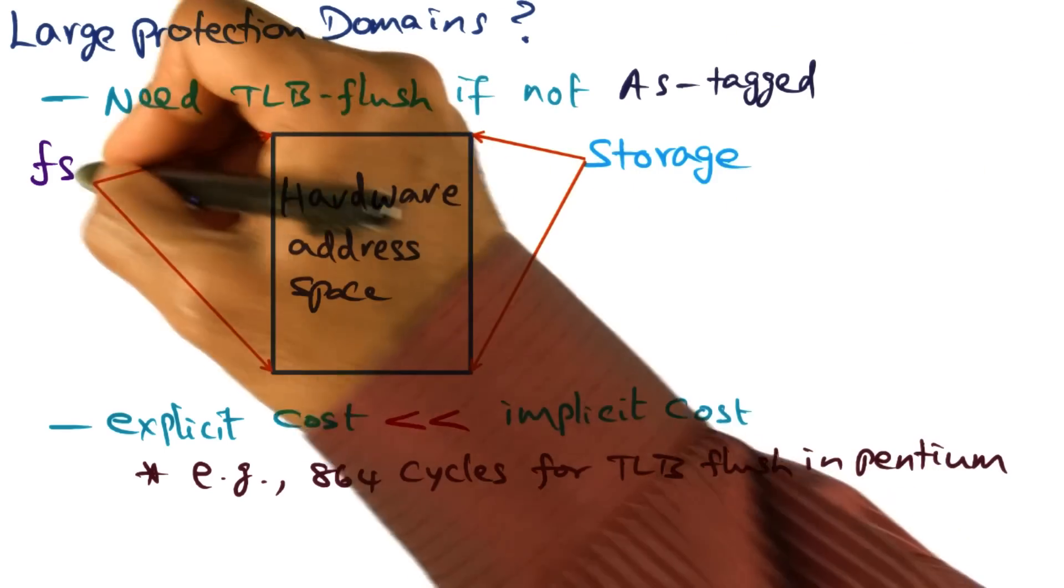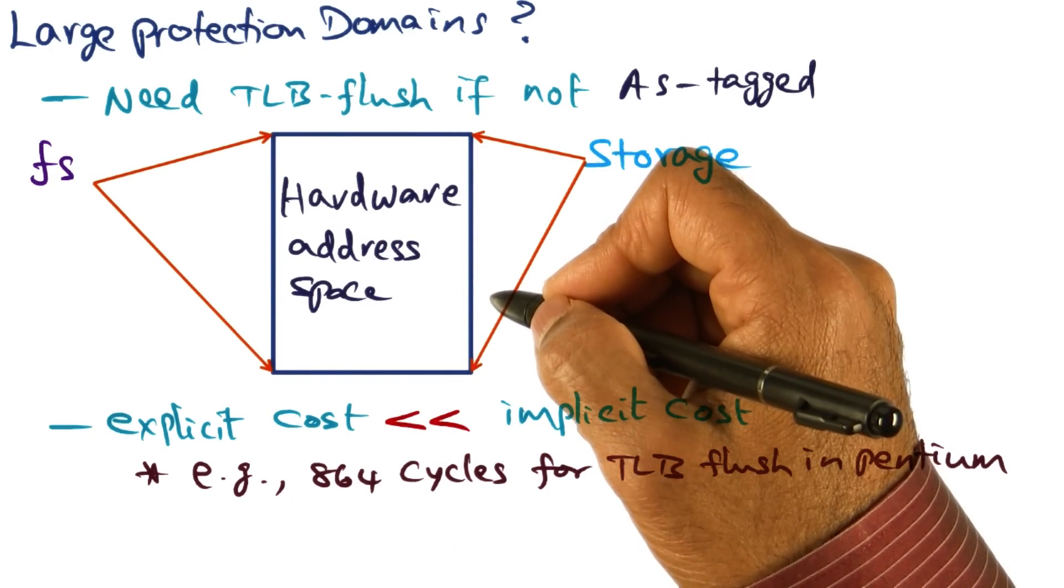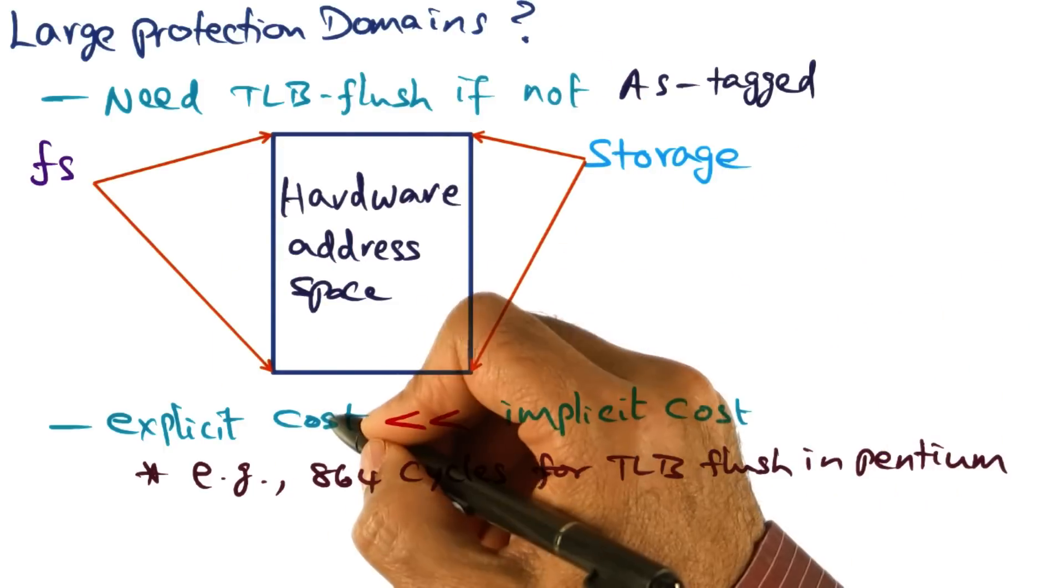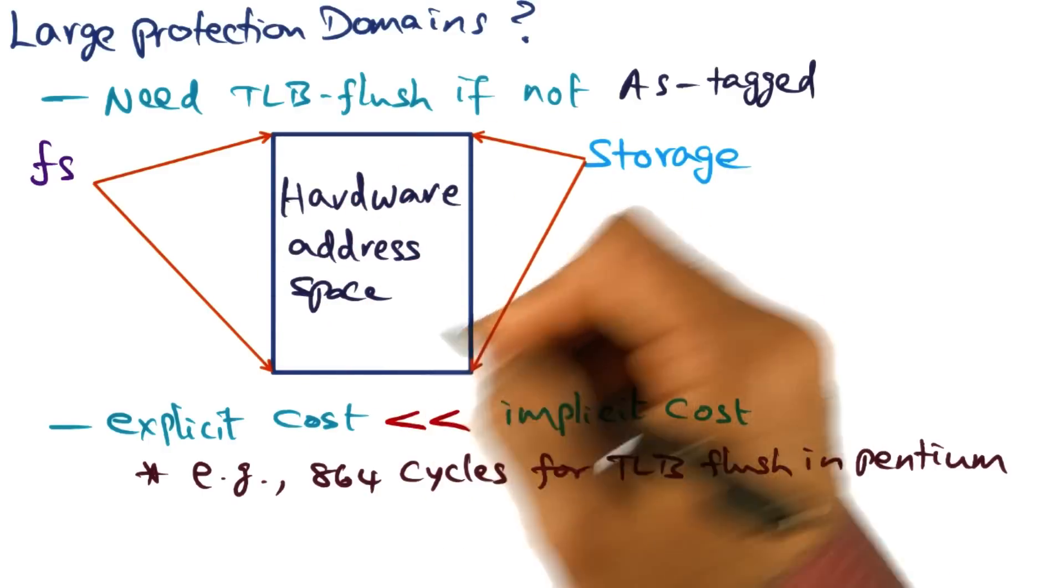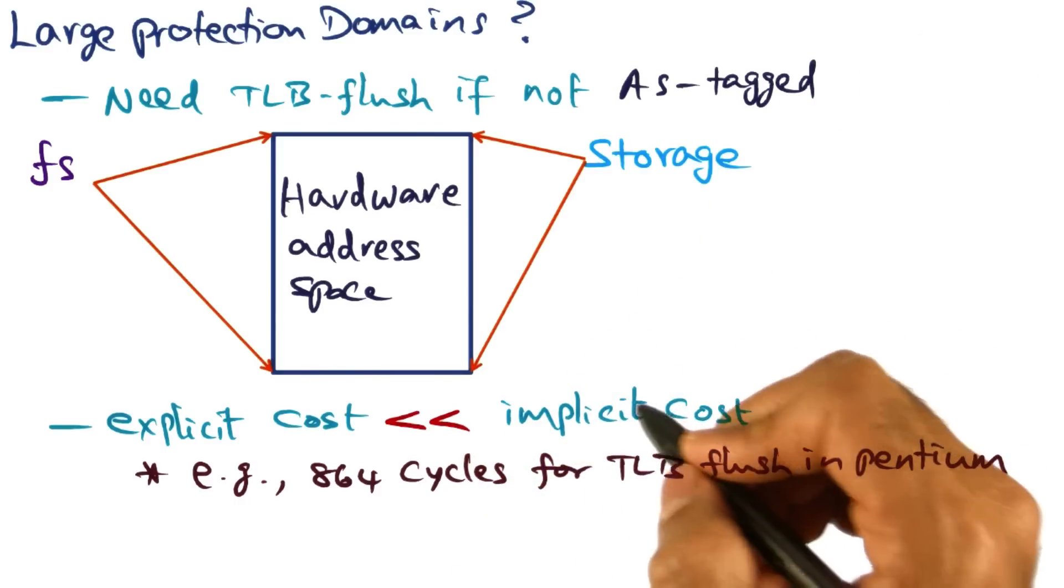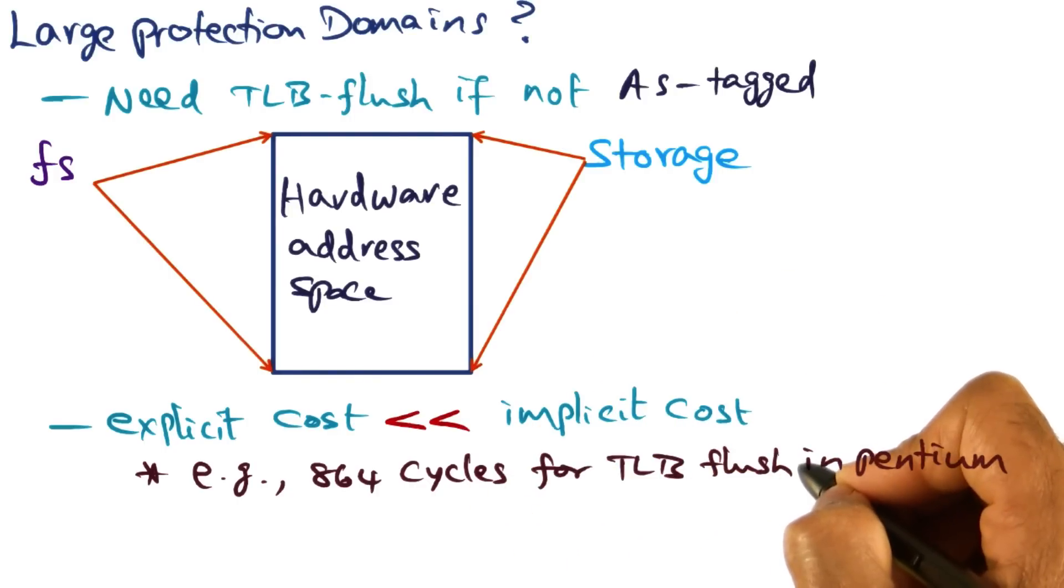But if the memory footprint of the service is so big that it occupies the hardware address space of the architecture completely, we're going to incur the explicit cost because we have to do a TLB flush if the TLB is not address space tagged. But that explicit cost is very insignificant compared to the implicit cost that is going to be incurred.